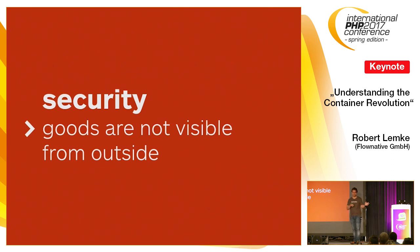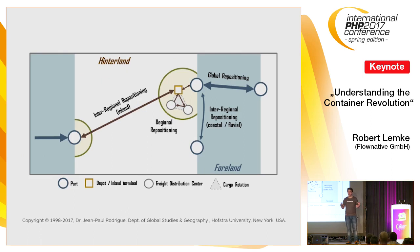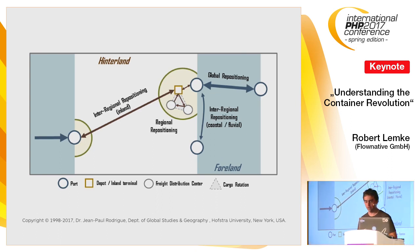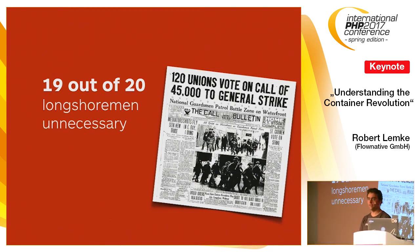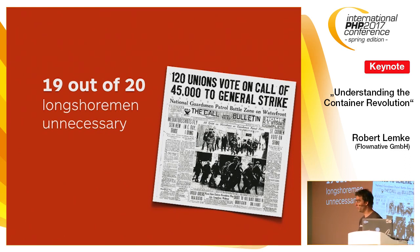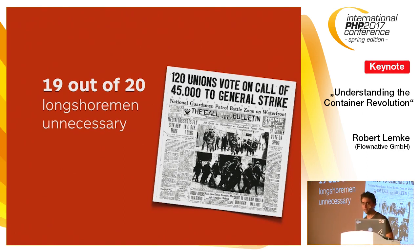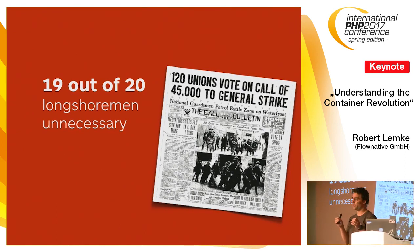It also had some unexpected benefits. The reliability of shipping goods was much better than before, so manufacturing could actually do just-in-time manufacturing — they could count on certain goods arriving at a certain point. Also, losses due to theft declined a lot because goods were not visible from outside anymore. And around the actual shipping, further industries evolved — for example, there's a whole industry about repositioning empty containers. For the people working in the shipping industry, this changed dramatically: 19 out of 20 longshoremen were unnecessary when containerization had its impact.